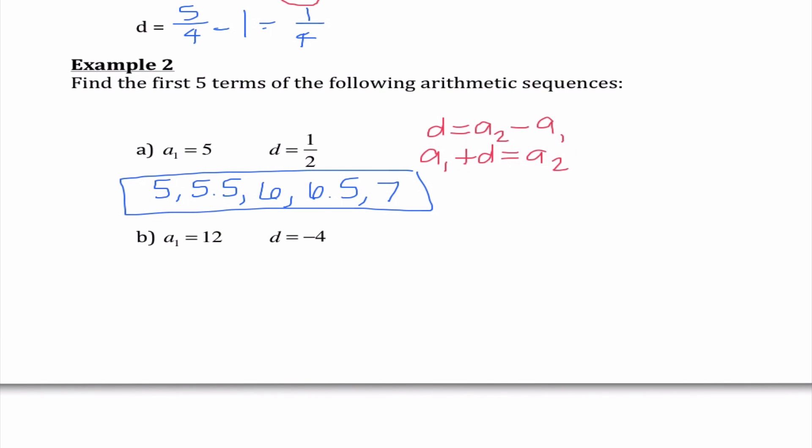If we look at b, the first term is 12. The difference is negative 4. So 12 plus negative 4 is 8. 8 plus negative 4 is 4. 4 plus negative 4 is 0. 0 plus negative 4 is negative 4. Honestly, if they give us a sub 1 and the common difference, it does not get any more difficult than this.